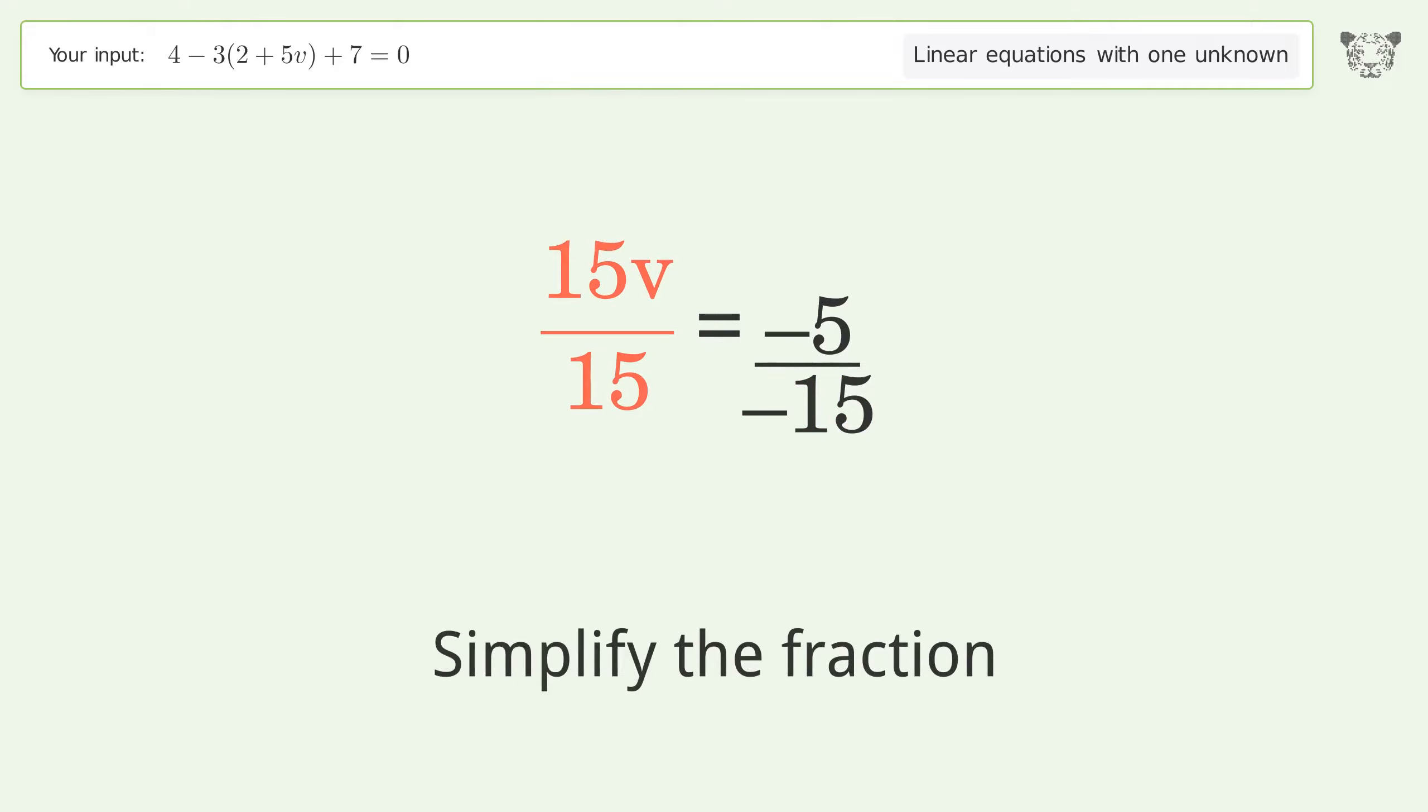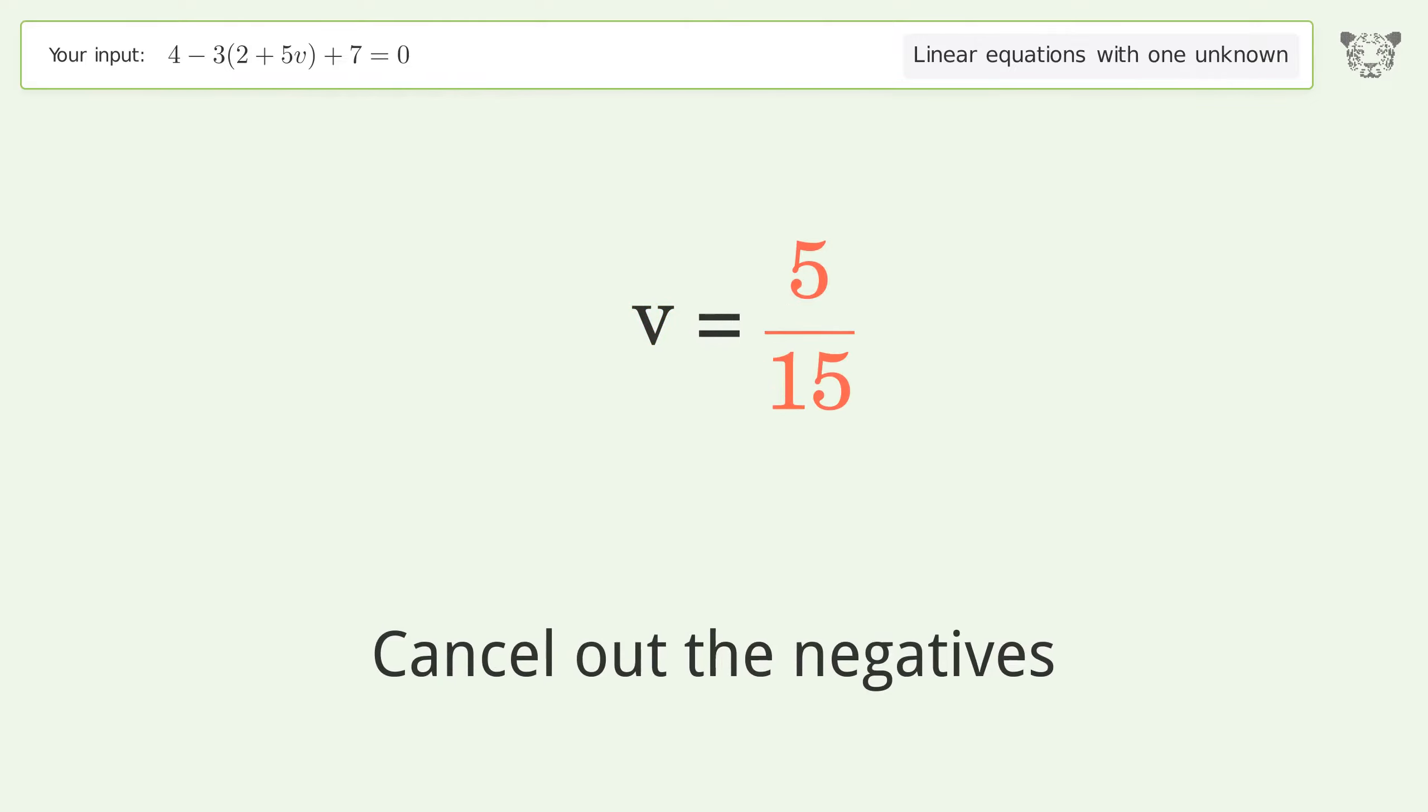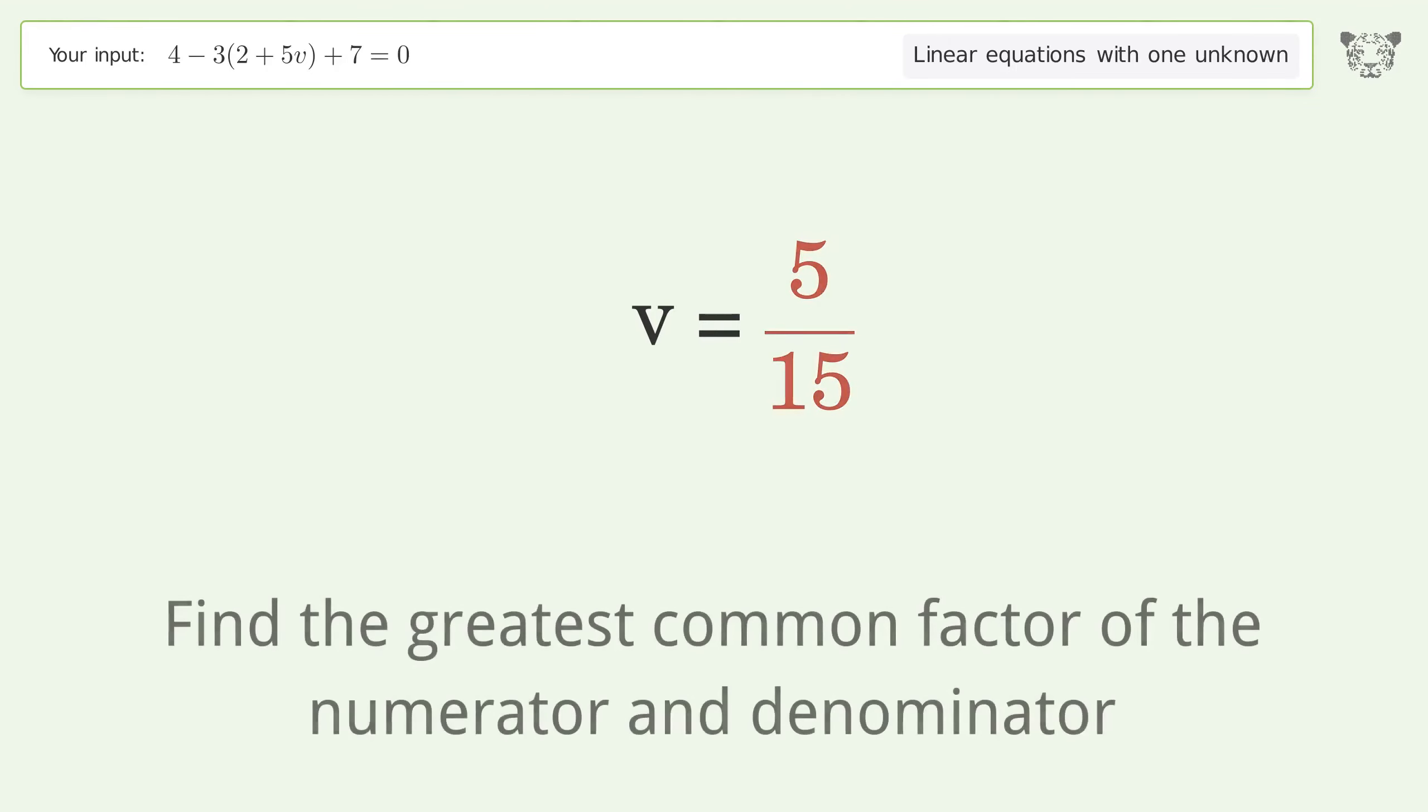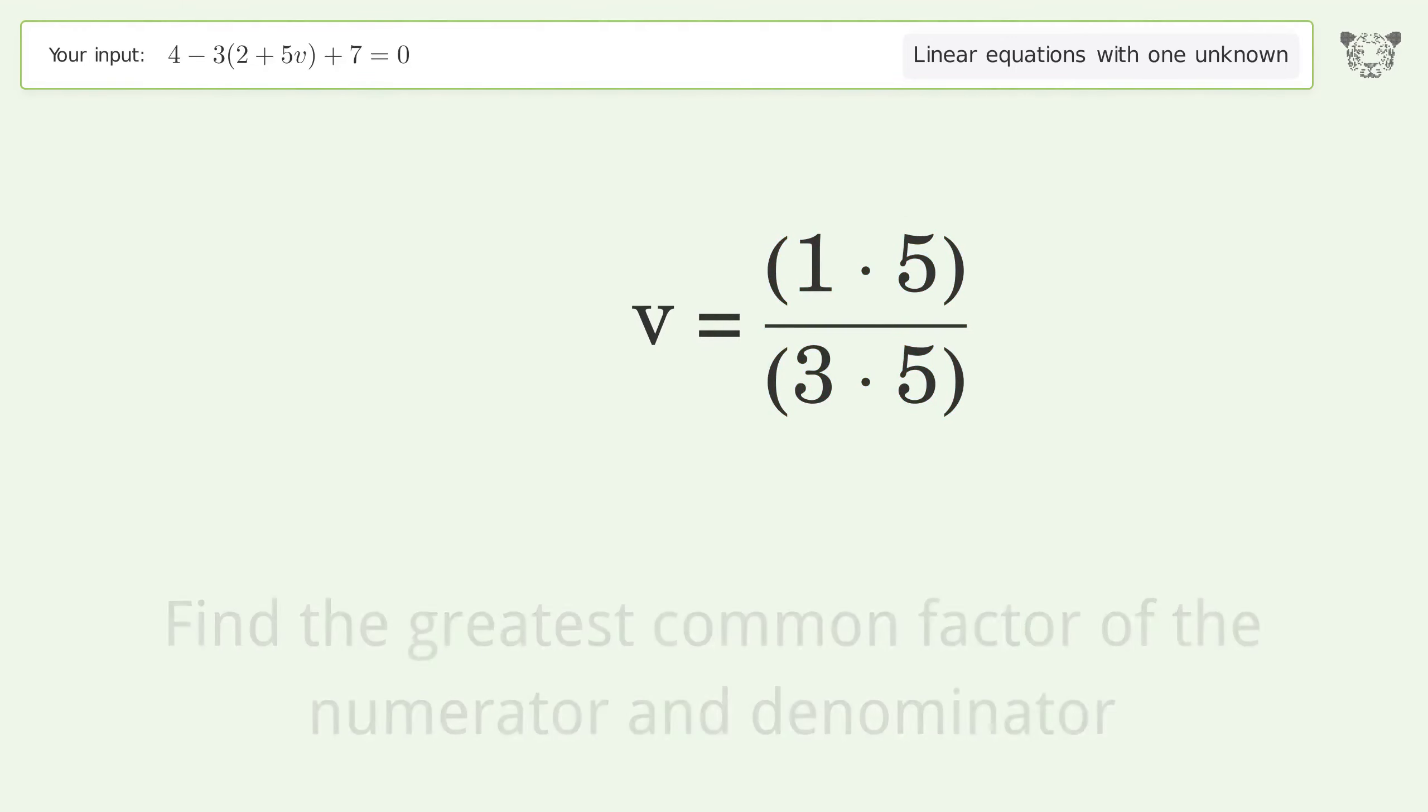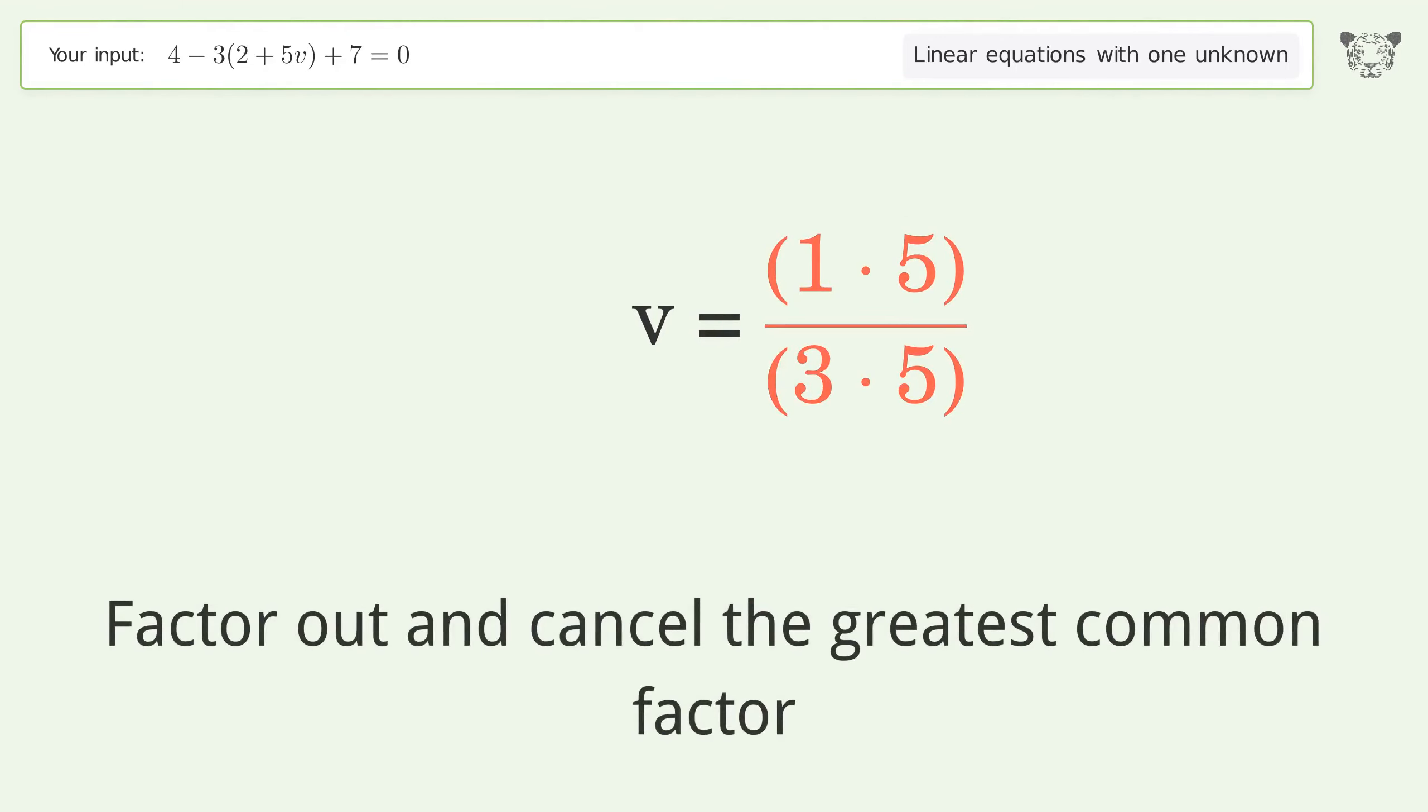Simplify the fraction. Cancel out the negatives. Find the greatest common factor of the numerator and denominator. Factor out and cancel the greatest common factor.